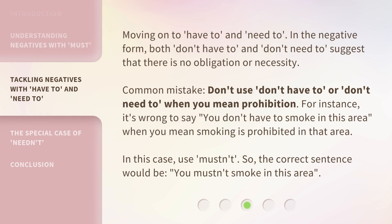Moving on to have to and need to. In the negative form, both 'don't have to' and 'don't need to' suggest that there is no obligation or necessity. Common mistake: don't use 'don't have to' or 'don't need to' when you mean prohibition.